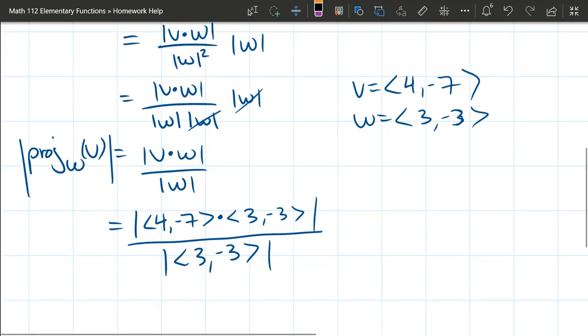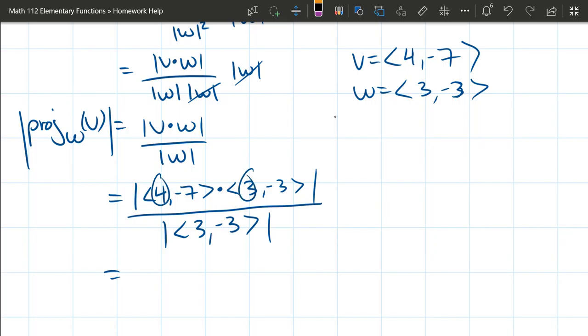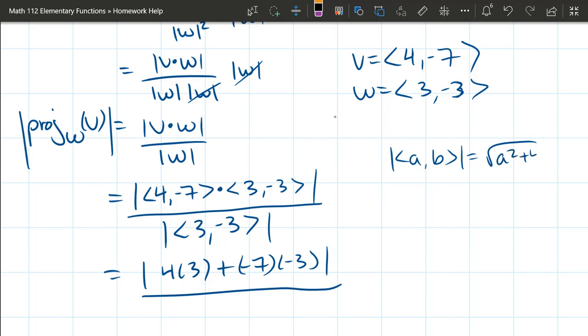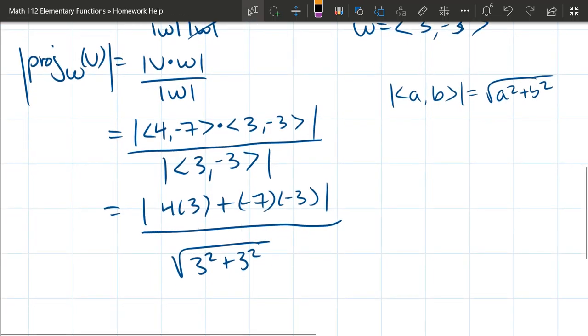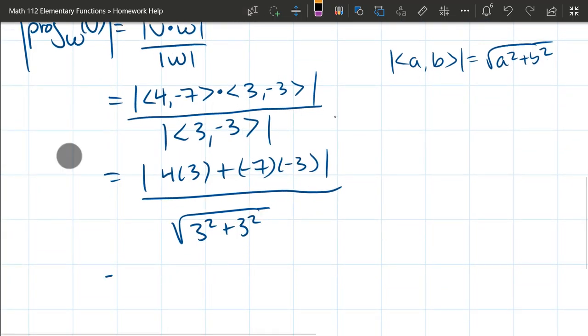You're just going to multiply the first coordinates and then multiply the second coordinates and add those together. So we got 4 times 3 plus negative 7 times negative 3 divided by, remember magnitude, if our vector was ab and we're taking the magnitude, it's square root a squared plus b squared. So we have square root 3 squared plus 3 squared. You should be wondering what about the negative 3? Well, what happens when you square negative, you're going to get positive. So when I know I'm going to be squaring, I don't bother writing the negative because it's going to just cancel out.